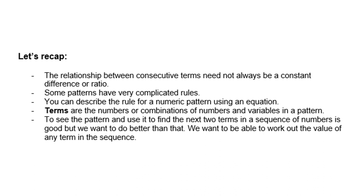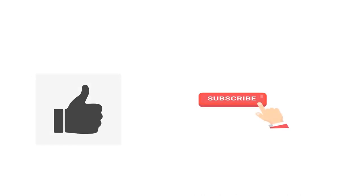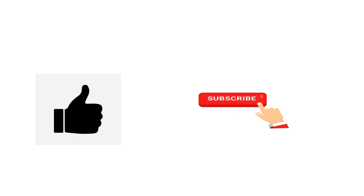Quick recap: the relationship between consecutive terms need not always be a constant difference or a ratio. Some patterns have very complicated rules. You can describe the rule for a numeric pattern using an equation. Terms are numbers or combinations of numbers and variables in a pattern. We want to be able to work out the value of any term in the sequence. This is Ahmed Suleiman with Mathematics with AMS — please don't forget to give a huge like and subscribe.